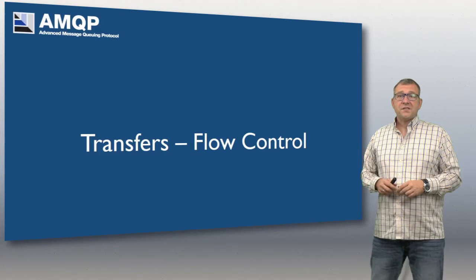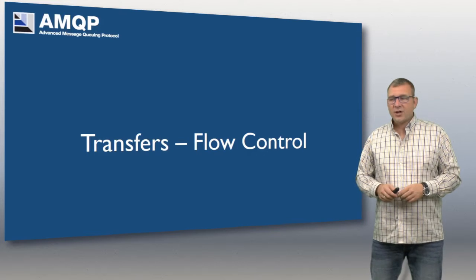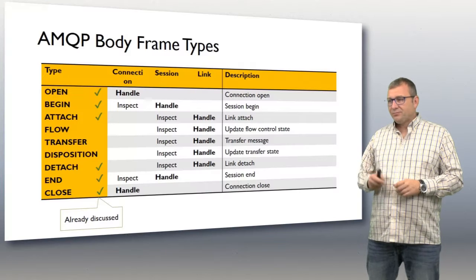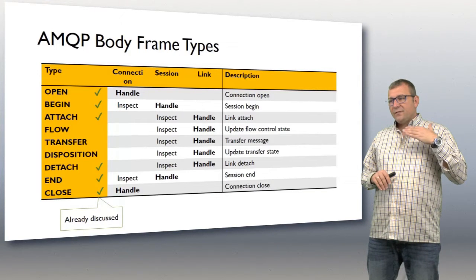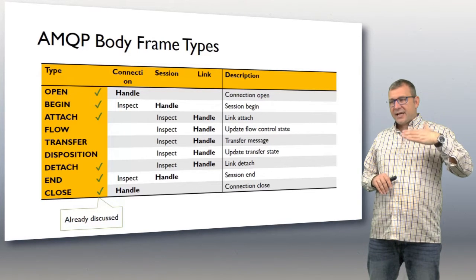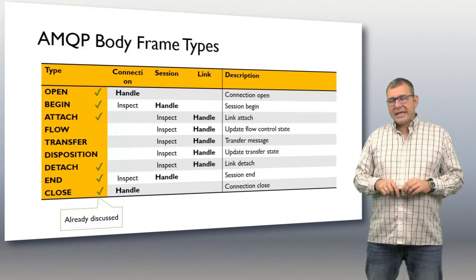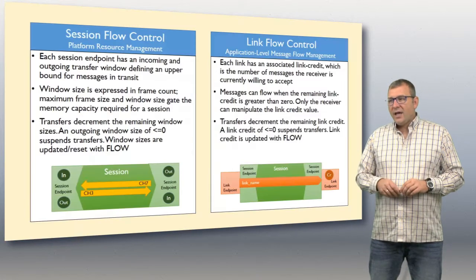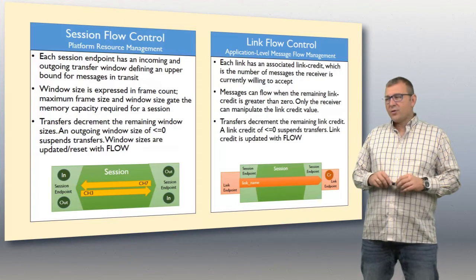This is the fourth of six sessions about AMQP 1.0, and in this session I'm going to talk about flow control in transfers of messages. We've so far talked about the frames open, begin, and attach, about detach, end, and close, and also in the previous session we talked about transfer and disposition, which obviously play a role in this, so we're going to revisit those.